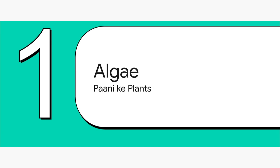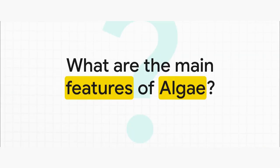First up, section one: algae. Let's call them the pioneer plants. We're starting with the simplest group. These are the real kings of the water, where the whole story of plant evolution really begins. So, what are the main features of algae that are super important for NEET? What's so special about them that sets them apart from the other plants?